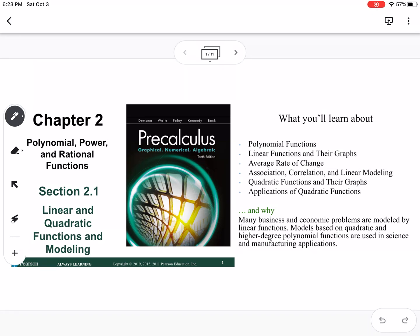So this is section 2.1, which is linear and quadratic functions and modeling. We're going to talk about polynomial functions, linear functions and their graphs, average rate of change, association and correlation, linear modeling, quadratic functions and their graphs, and then applications of quadratic functions.